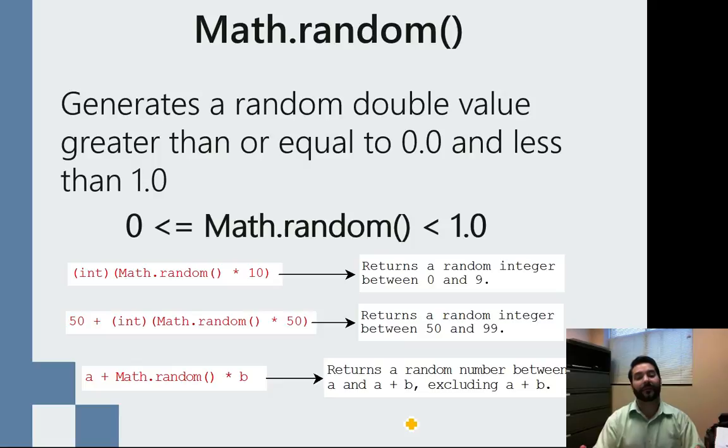And so how it operates is basically Math.random works in the simple set that it's going to generate a random number from zero, including zero, to 1.0, not including it.